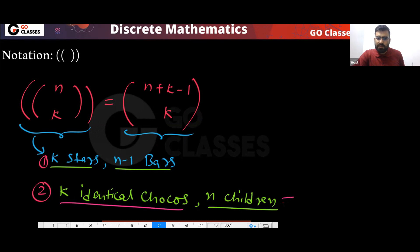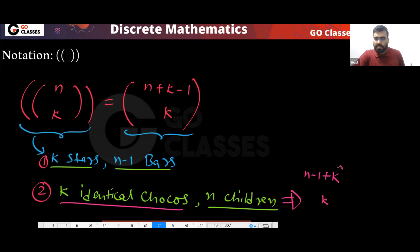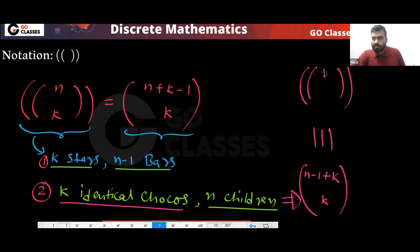So the number of ways to distribute K identical chocolates to N children is the value written by some authors using double bracket notation. This notation is clear: it equals N+K−1 C K.